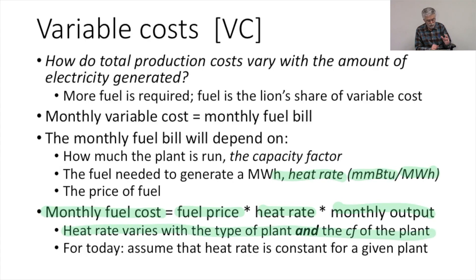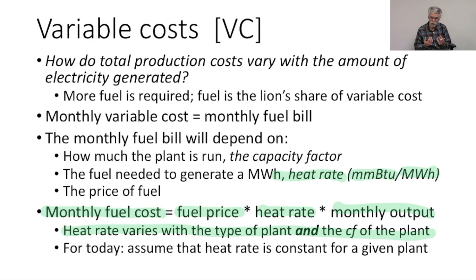The heat rate is going to vary not just with how much we run the plant, but it's going to vary a lot with the type of plant. So different kinds of plants are going to have very different heat rates. For example, a base load coal-fired or natural gas-fired power plant is going to have a much lower heat rate than, say, a gas turbine peaking unit. We'll spend a lot of time talking about these differences as we move into the next unit.